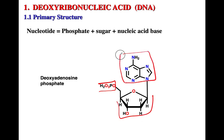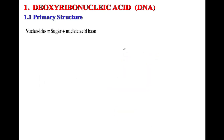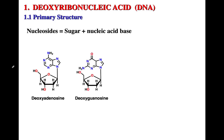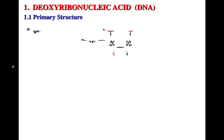The nucleotide is the combination of phosphate, sugar, and nucleic acid base — for example, deoxyadenosine phosphate, where the sugar is deoxyribose. A nucleoside is only the sugar and the base; there is no phosphate group. The nucleosides are deoxyadenosine, deoxyguanosine, deoxythymidine, and deoxycytidine. This should be a good review for most of you.